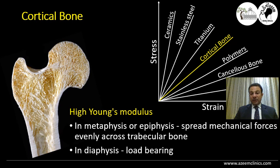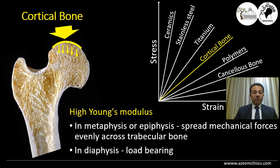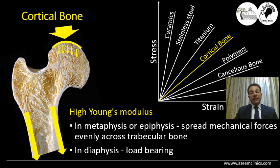While the cortical bone has a high modulus of elasticity — it responds with low deformation to high stresses. That's why cortical bone is located either on the metaphysis or the epiphysis as a cortical shell surrounding the trabecular bone, taking the force and spreading it across a huge surface area of the trabecular bone, or in the diaphysis working as a load-bearing device.